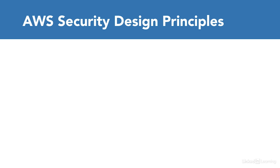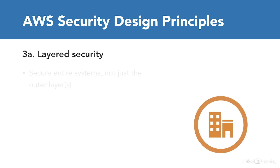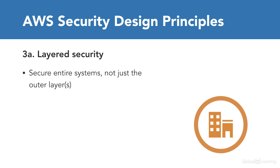The next section is around layered security and automation of security best practices — really two aspects of a similar design concept. In layered security, you want to secure the entire system, not just the outer layers. Don't just secure at the edge of your system, typically at the boundary of the VPC, but also within your system. For example, how do your internal EC2 instances communicate with your database instances?